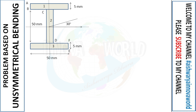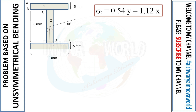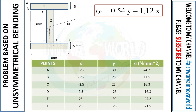The centroid is at x̄ = 25 and ȳ = 30, so we set that point as the origin (0, 0). The equation becomes σb = 0.54y − 1.12x. Now we need to find the coordinates of x and y for the important corner points: A, B, C, D, E, and F. Along the x-axis, left is negative and right is positive; upward is positive and downward is negative.